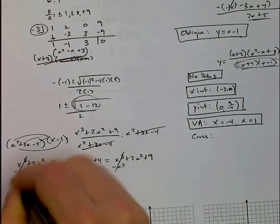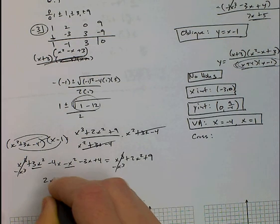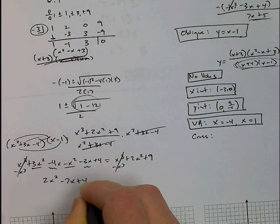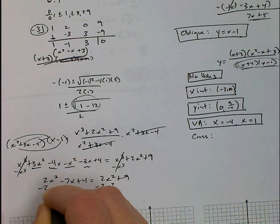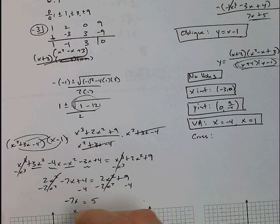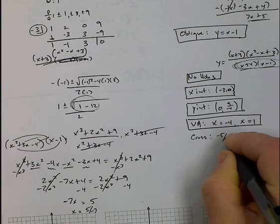So x cubed plus 3x squared minus 4x minus x squared minus 3x plus 4. And that's going to just be equal to this stuff. The x cubes cancel. If I combine these, I get 2x squared. And if I combine these, I get negative 7x. The 2x squareds cancel. So negative 7x equals 5. So it does cross when x is negative 5 over 7.